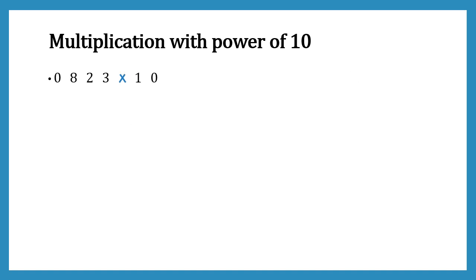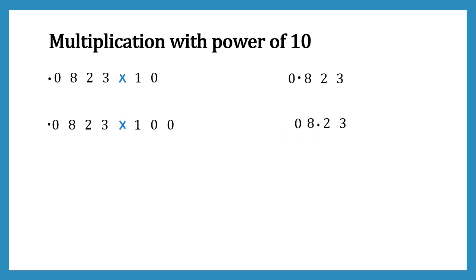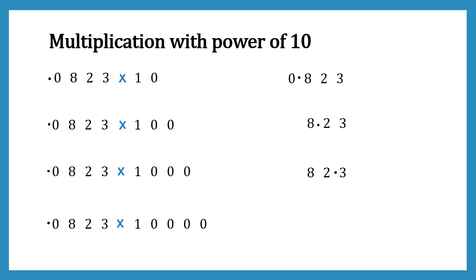Now let's look at another multiplication example. This time I've taken the number 0.0823 and we're multiplying it by 10 first — that's 10's power 1 — so we shift the decimal one place to the right. Our result becomes 0.823. Multiplying by 100 means shifting two places right, giving us 8.23 — we remove the leading zero since it has no significance. Multiplying by 1000 means shifting three places; after shifting and removing the leading zero, our result is 82.3.